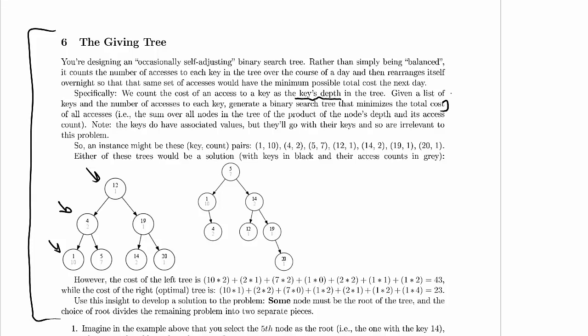This is really common. There are values. Obviously, our user cares about the values. We don't really care about the values because it's got no effect on our algorithm. So an instance of the problem might be these key-count pairs. So key one has been accessed ten times, key four has been accessed twice, key five has been accessed seven times, and so on and so forth.